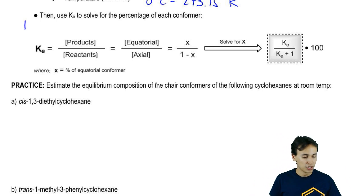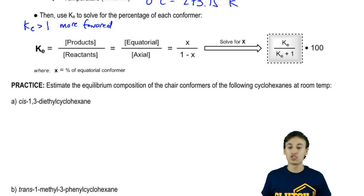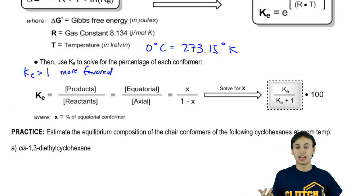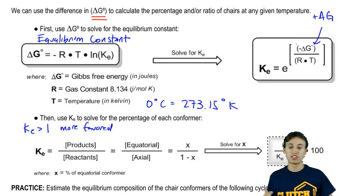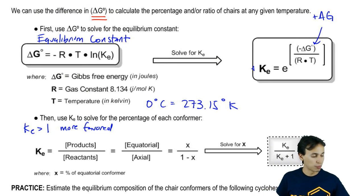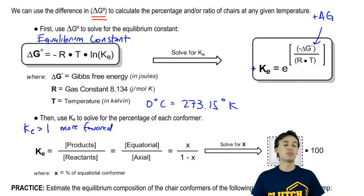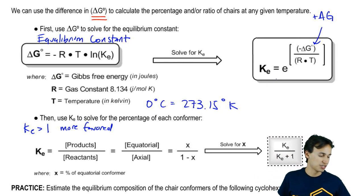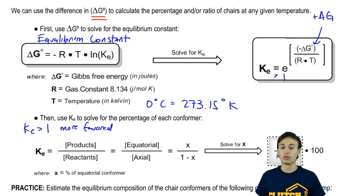I'm not sure if you guys remember, but if you have a KE over 1, that means you're going to the more favored direction. I'm just telling you guys right now, if we use a positive number for delta G, we're going to get a number that's above 1 for KE. We're going to get this greater than 1.